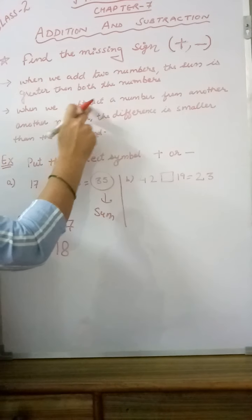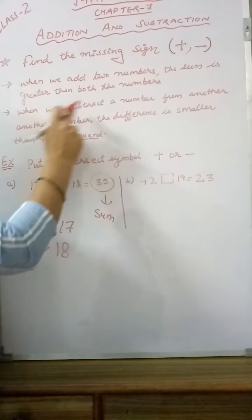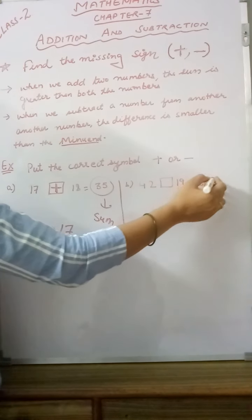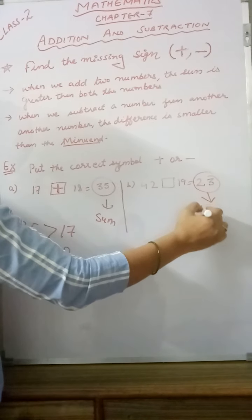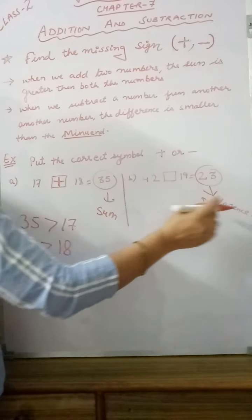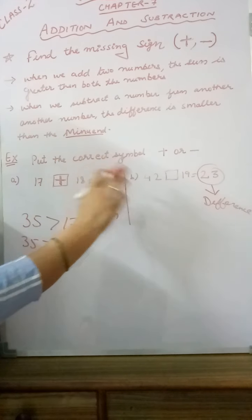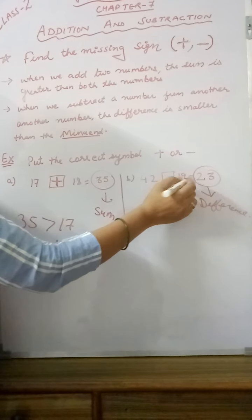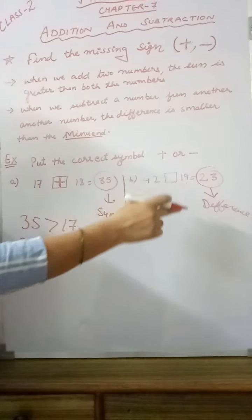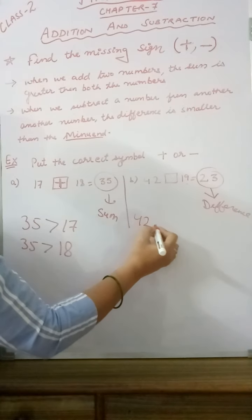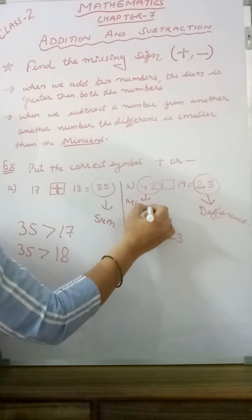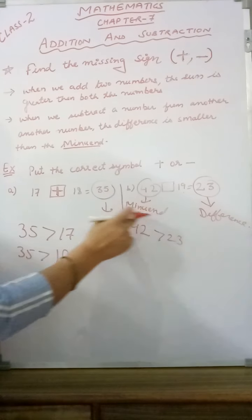Let's see the second rule. When we subtract a number from another number, the difference is smaller than the minuend. Here, 19 is subtracted from 42 and the difference is 23. This 23 is the difference. Whenever a difference is less than the minuend, this is the minuend.